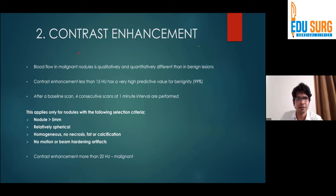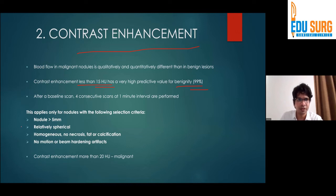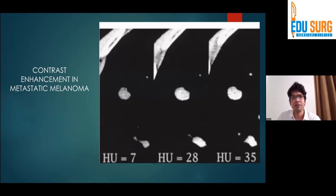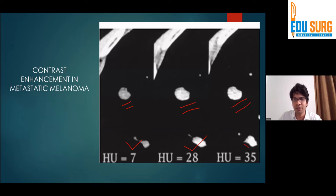The second point is the contrast enhancement factor. Any contrast enhancement less than about 15 HU has about a 99% chance of being benign. This applies when the nodule is more than 5 mm, relatively spherical, relatively homogeneous, and there are no artifacts. If contrast enhancement is more than 20 HU, the lesion is more likely malignant. An example shows a plain scan with density of 7 HU, then after one minute the HU was 28, and after one and a half to two minutes it was 35 — this was a metastatic lesion of a melanoma.